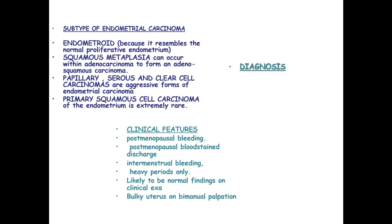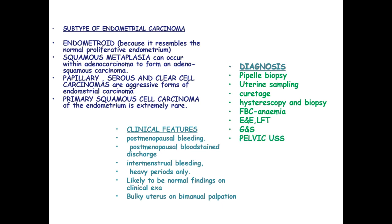To diagnose a person with endometrial carcinoma after taking normal history and physical examination, you conduct a pipelle biopsy, uterine sampling and curettage. We have hysteroscopy to visualize these tumors and full blood count where you'll realize there will be low hemoglobin indicating anemia, urea and electrolytes together with liver function tests, pelvic ultrasound, transvaginal scanning, magnetic resonance imaging, and chest X-ray to detect any metastasis to the lungs.